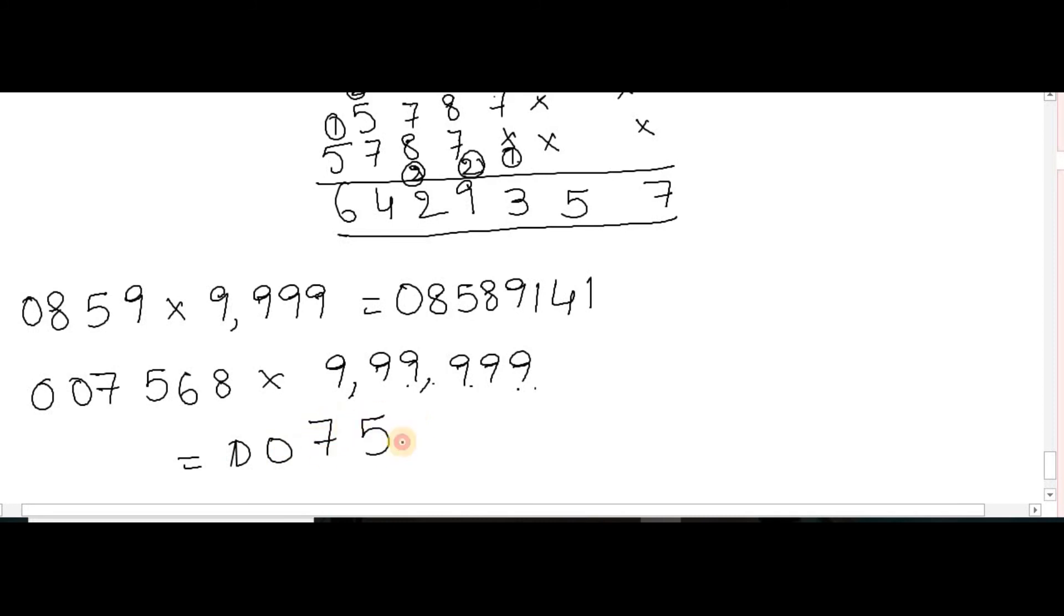Now as it is: 0, 0, 7, 5, 6, 8. Just remember this: 9, 9, 2, 4, 3, 2. So this is the answer. You can just omit zeros and this is going to become your answer.